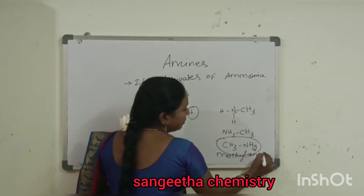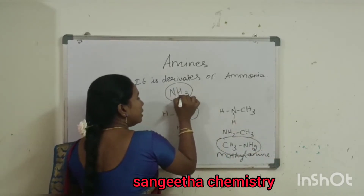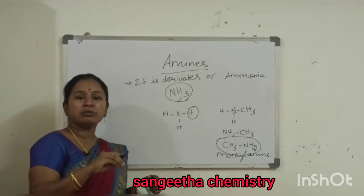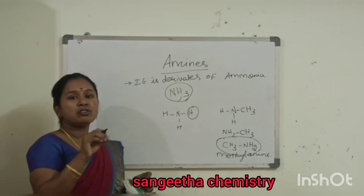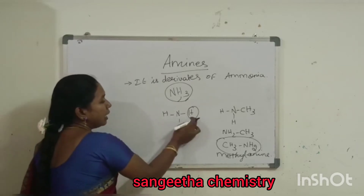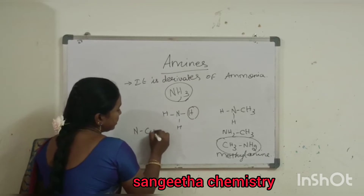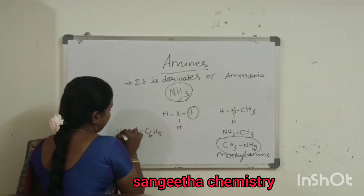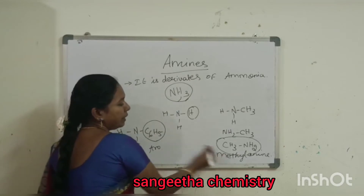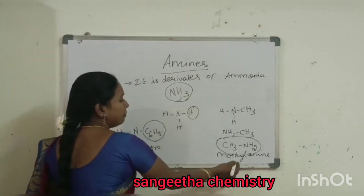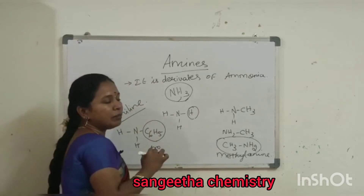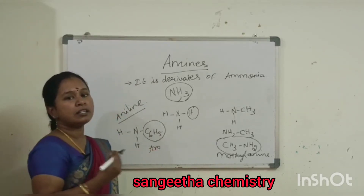Another example is ethyl amine. When we replace the hydrogen with an aryl group — for example, C6H5 (a phenyl group) — we get an aromatic amine. Adding a phenyl group to nitrogen gives us aniline. Aniline is a term used commonly in laboratory practice, for example to prepare a diazonium salt or a dye.